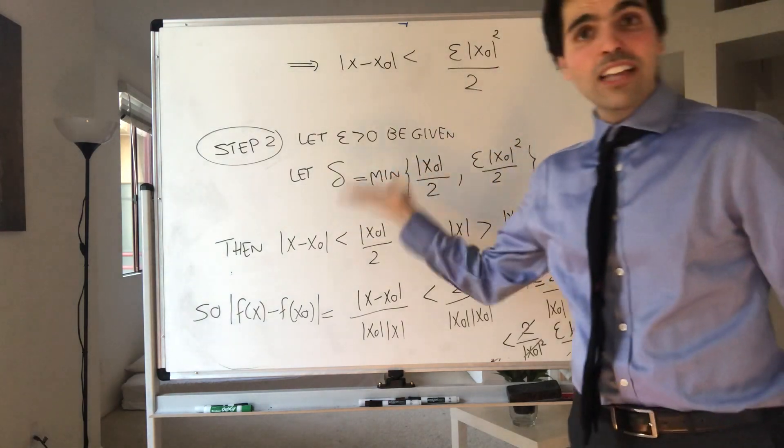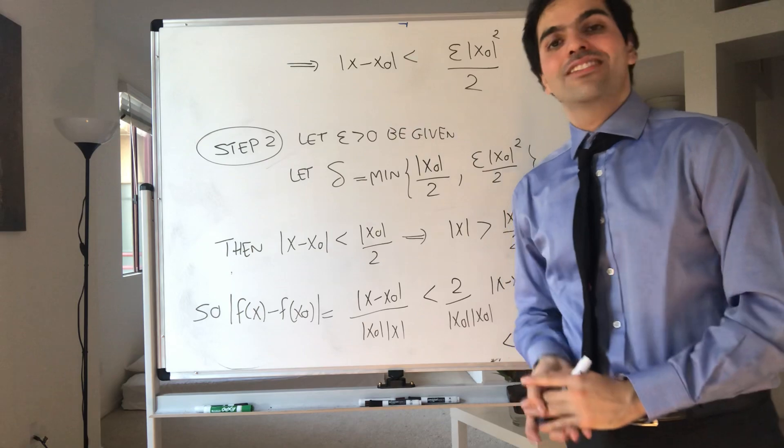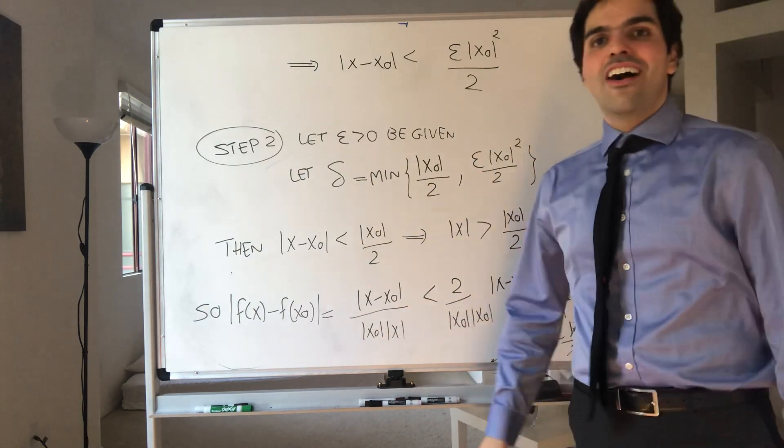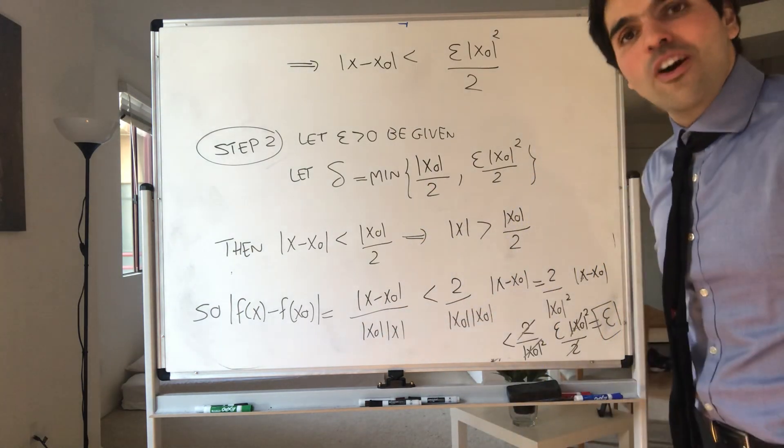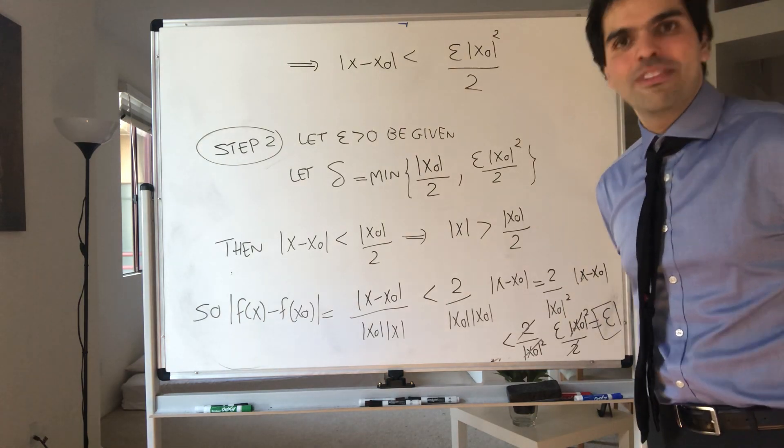And therefore, what do we get? We get that 1 over x is continuous at every non-zero x naught. So it is continuous on its domain. All right, I hope you liked this. If you want to see more math, please make sure to subscribe to my channel. Thank you very much.